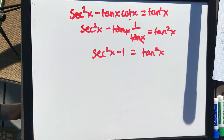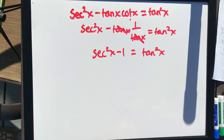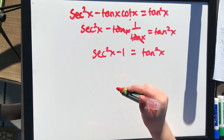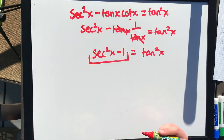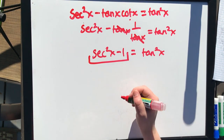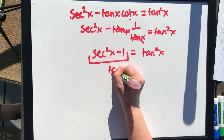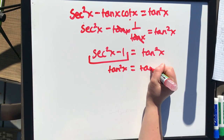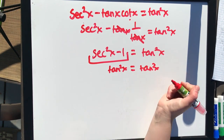From here, we have two options — an easier route and a harder route. The easy way: looking at your identities, you can see that secant squared x minus 1 is a Pythagorean identity which equals tan squared x. So tan squared x equals tan squared x — verified.